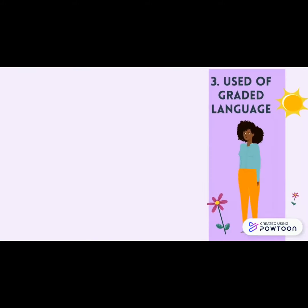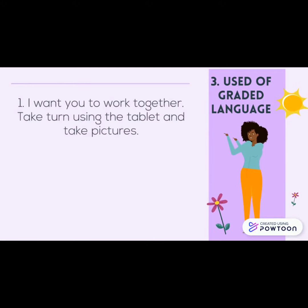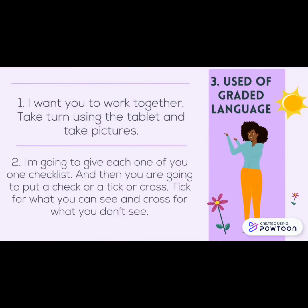The third aspect is Use of graded language. For example: 1. I want you to work together — take turns using tapping and take pictures. 2. I am going to give each group a few words checklist, and then you are going to put a check or a tick or cross — tick for what you can see and cross for what you don't see.